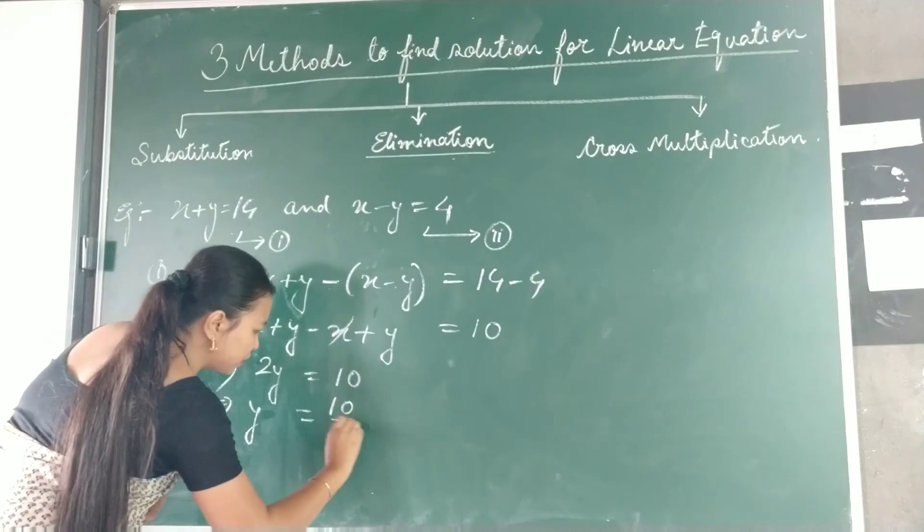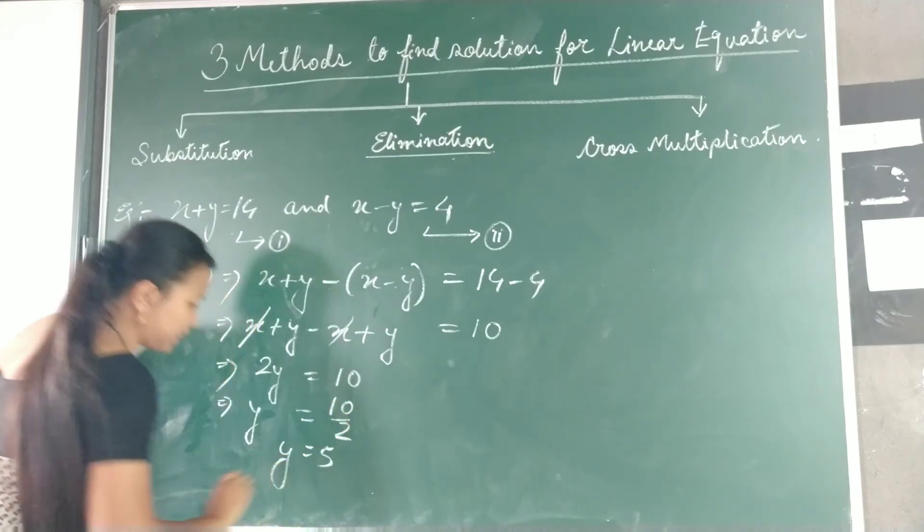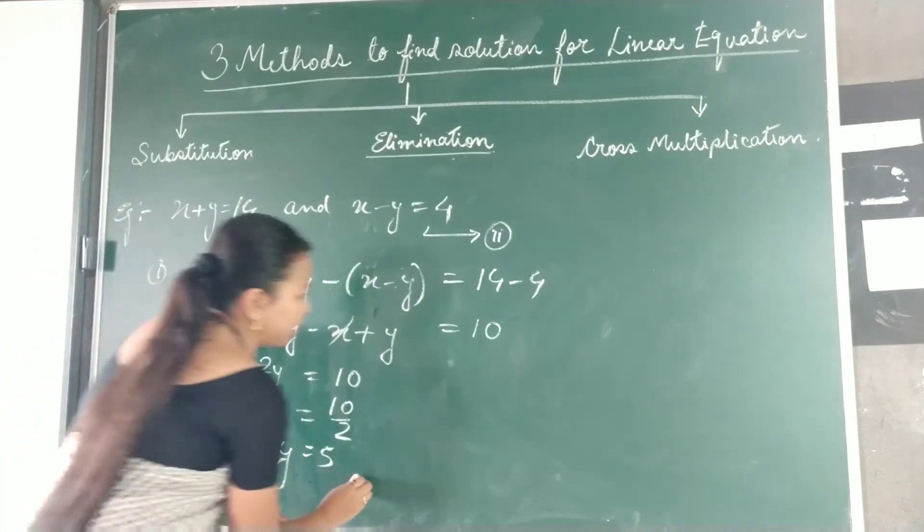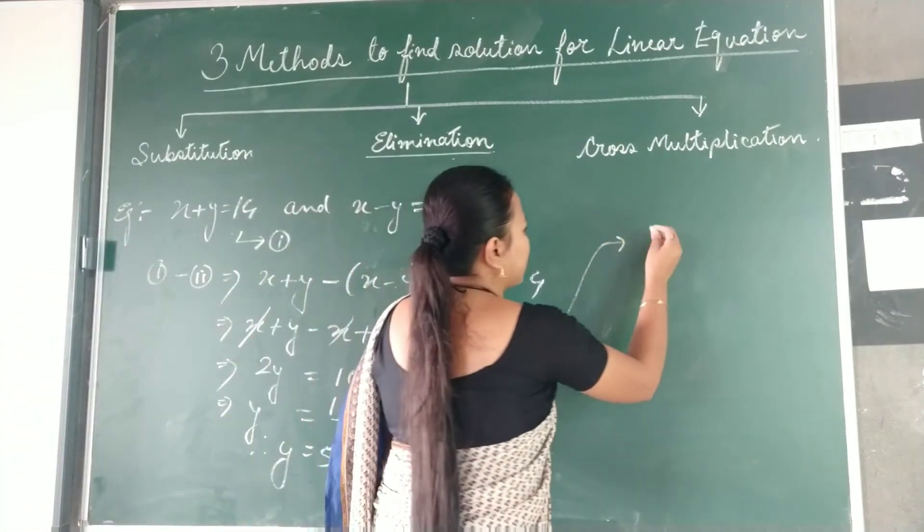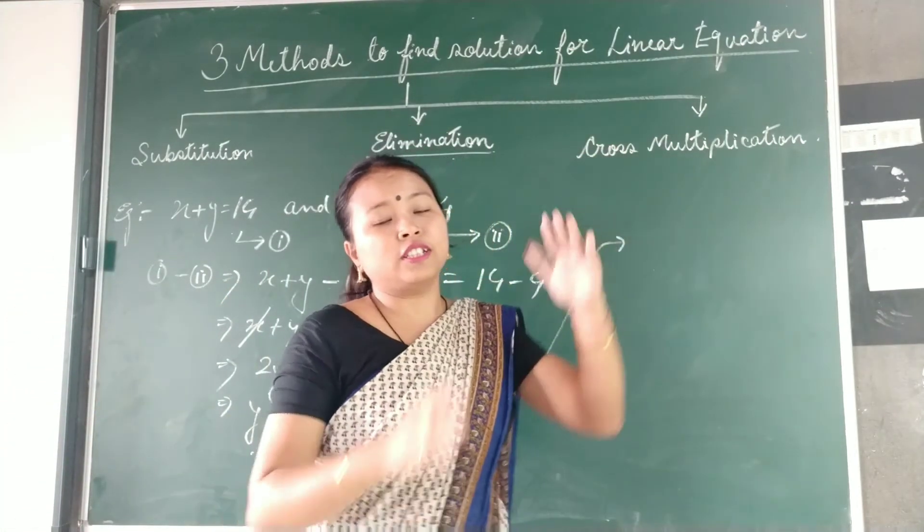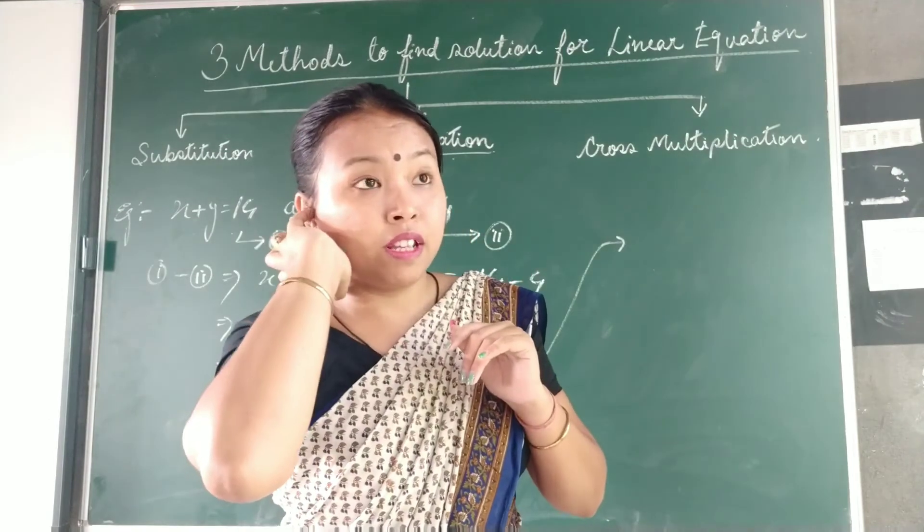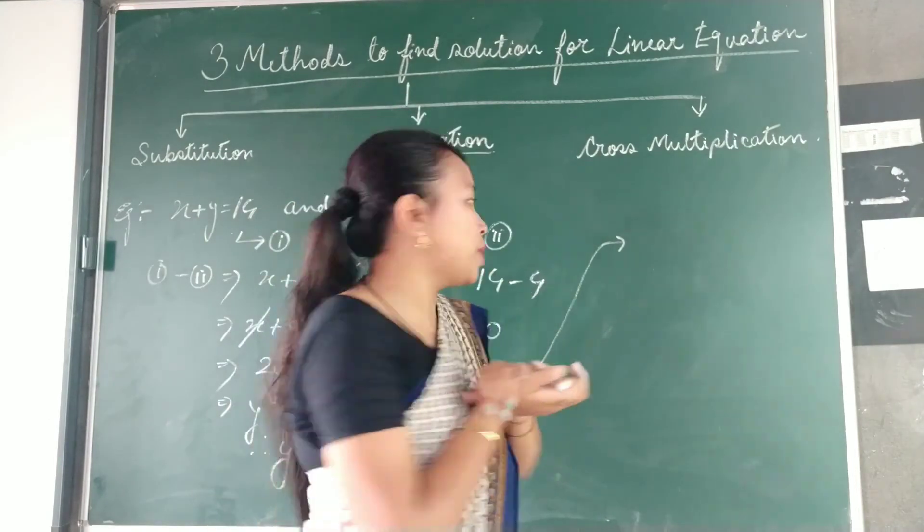So you are getting the value of y as 10 by 2, which is 5. Now putting the value of y - I am doing it this way, but when you do it in your exam, do it on a second page.